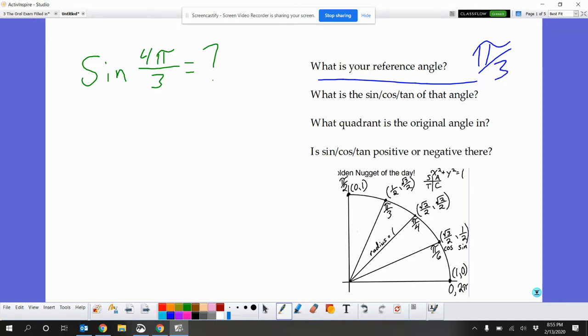Then I need to figure out what the sine, cosine, or tangent, in this case sine, of that angle. So there's pi over 3. That's kind of living in my head. And the sine is the y value, so I know that it is the square root of 3 over 2.